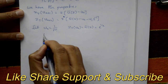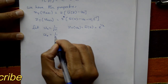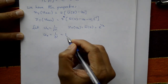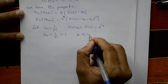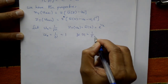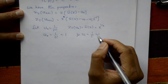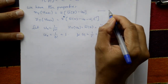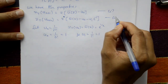Put n equal to 0: U_0 means 1 upon 0 factorial, and 0 factorial is 1, so U_0 equals 1. Put n equal to 1: U_1 means 1 upon 1 factorial, which is also 1. Now use these results in the two shift equations.